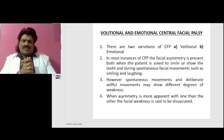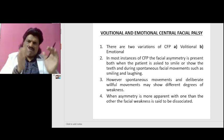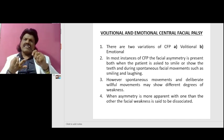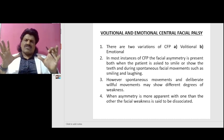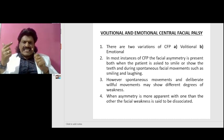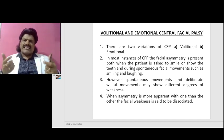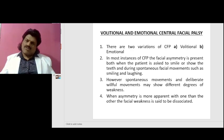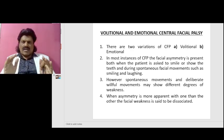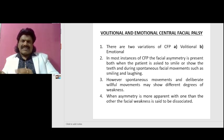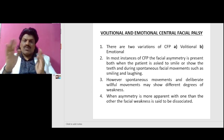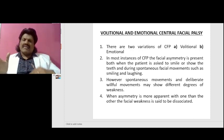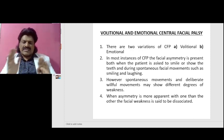Another important concept is the volitional and emotional central facial palsy. There are two variations: volitional and emotional. In most instances of central facial palsy, facial asymmetry is present both when the patient is asked to smile or show the teeth and during spontaneous facial movements such as smiling and laughing. However, spontaneous and deliberate willful movements may show different degrees of weakness. When asymmetry is more apparent with one than the other, the facial weakness is said to be dissociated.